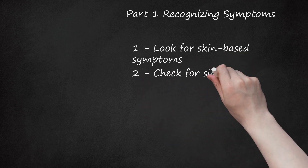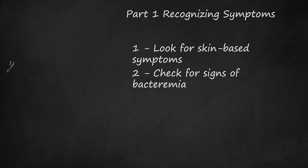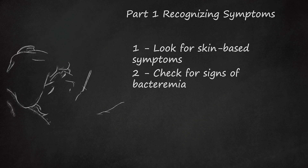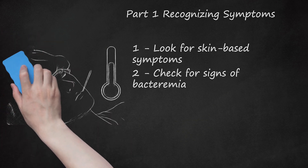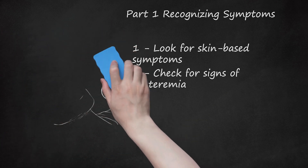Check for signs of bacteremia. Bacteremia is a condition that is caused when staph bacteria gain access to the bloodstream. This is a serious issue as the staph infection can travel to other parts of the body. If staph reaches other areas, such as internal organs or bones, it can infect them as well. Having a fever may indicate the presence of bacteremia. Low blood pressure will usually accompany an instance of bacteremia.